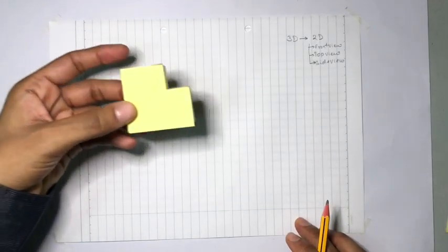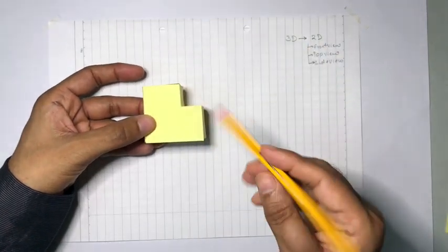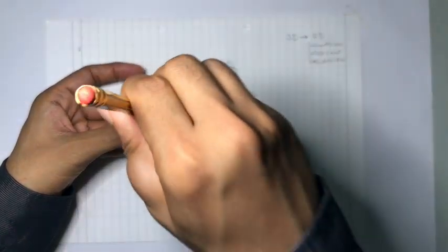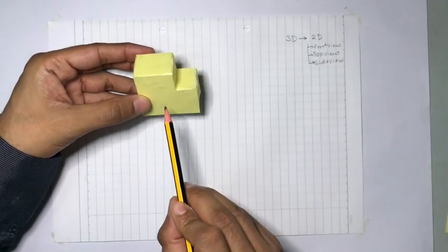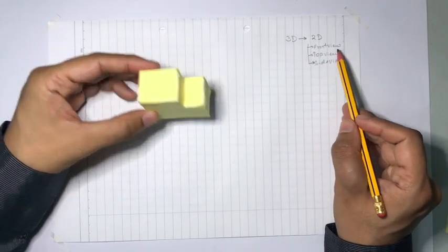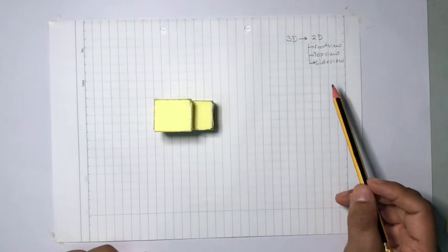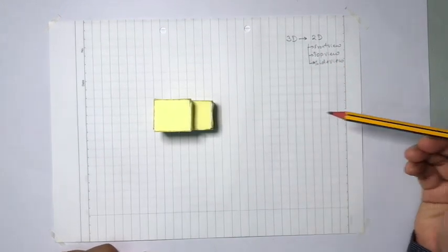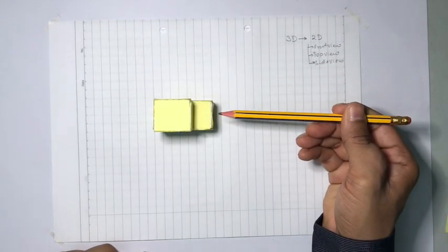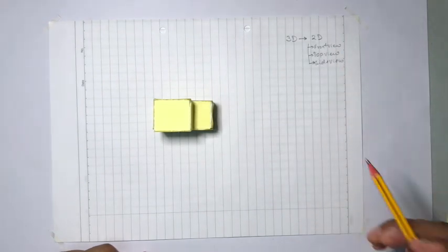These are called the orthogonal views. If this is the three-dimensional structure, when you look from the front like this, this is the front view. When I look at this structure from the top, then I call it a top view. And when I view the same structure from the right side, then I call it a side view.